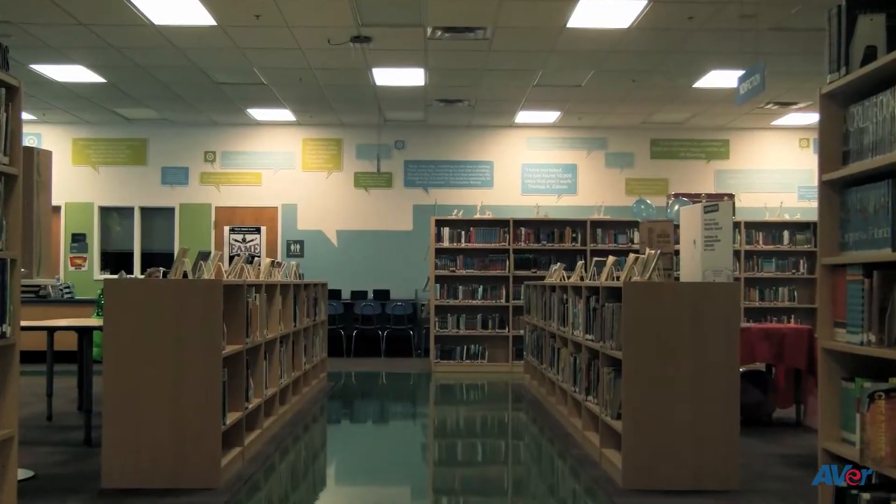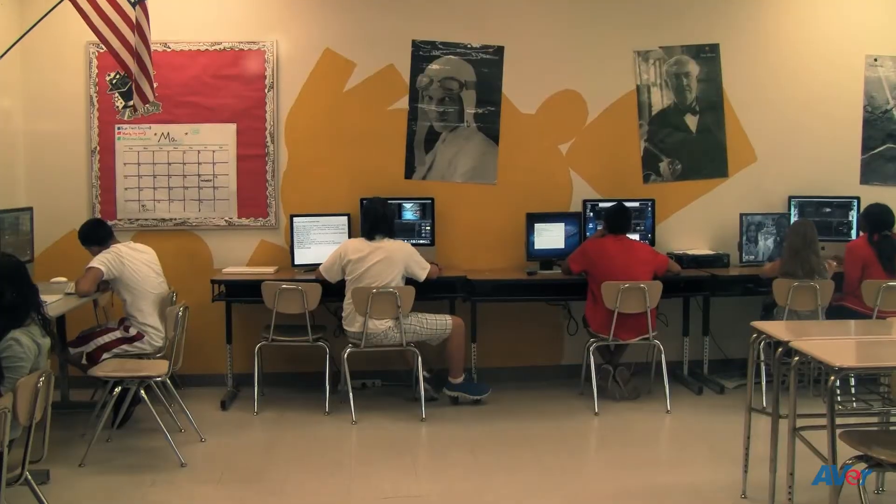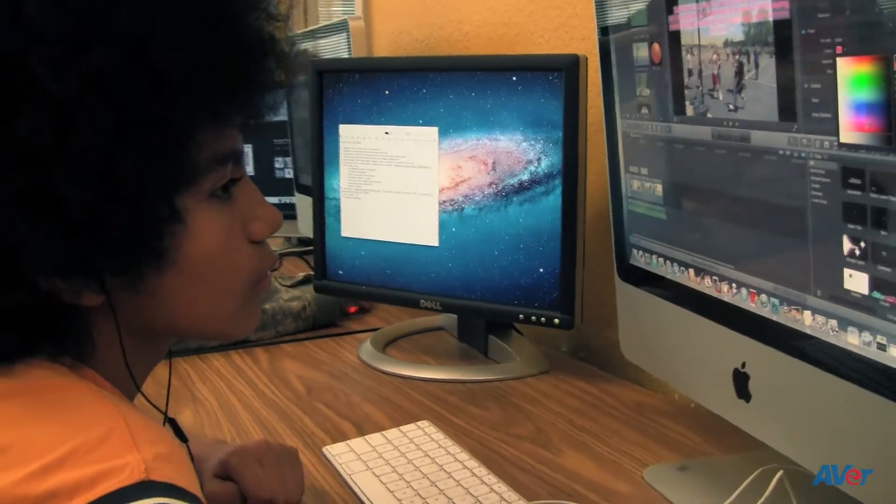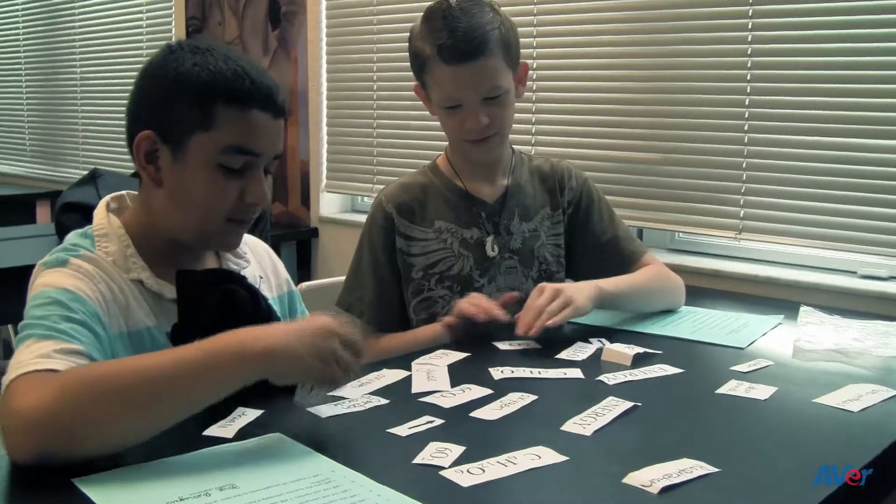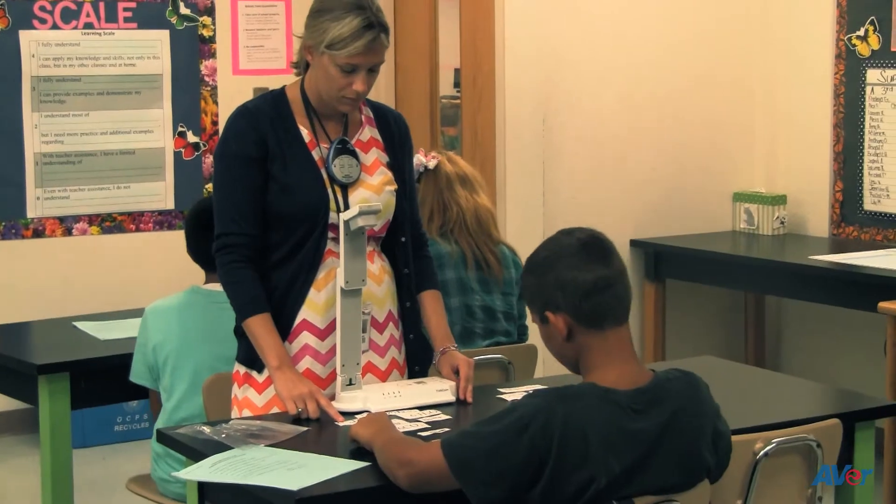I think when we first started down this path we were really looking at engagement. One of the things that we saw was we have a large proportion of kids who struggle with reading. When you look at their IQs and cognitive ability, we should only have one or two that struggle. So why are they disengaged? Why are they hating coming to school? That's really where we started down the technology path—just engagement.